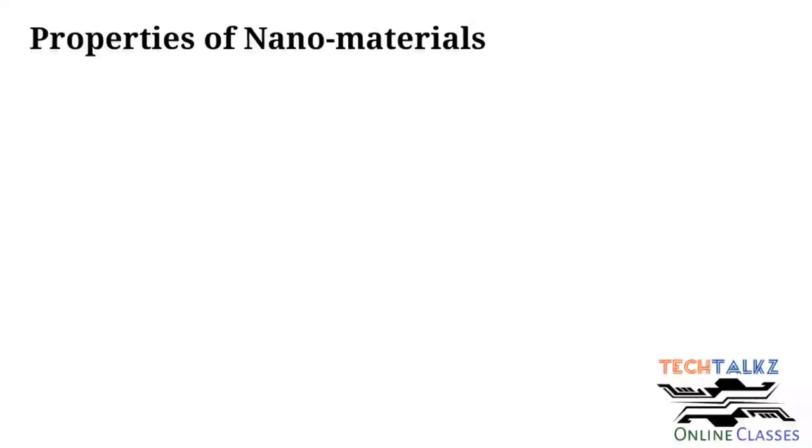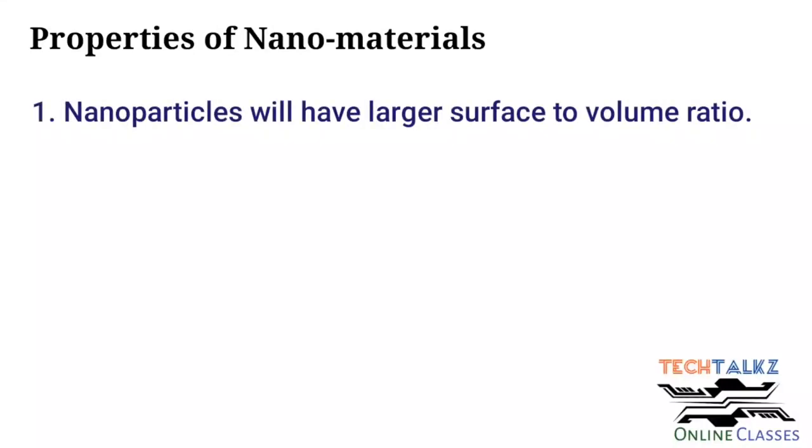Now we can discuss about the properties of nanomaterials. The properties of materials can be different at the nanoscales for two main reasons. First point is that nanoparticles have a relatively larger surface area to volume ratio compared to the bulk material. We have seen that.